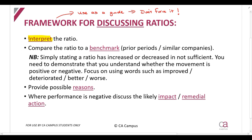You are then going to compare the ratio to a benchmark — in other words, compare the current year calculation to prior periods or similar companies if the information is available. The reason why we do this is you don't know if a ratio is good or bad unless you have something to compare it to. Comparing to prior periods shows whether the ratio has improved or deteriorated, and comparing to similar companies shows whether the company has performed better or worse.